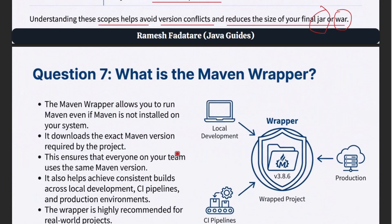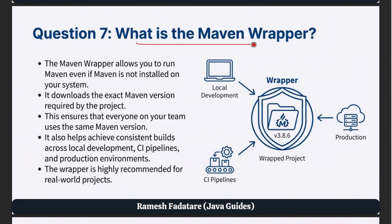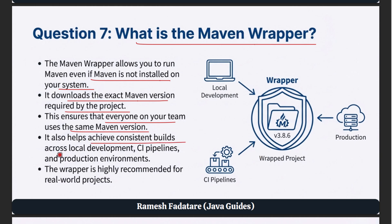Question 7: What is the Maven wrapper? The Maven wrapper allows you to run Maven even if Maven is not installed on your system. It downloads the exact Maven version required by the project, ensuring that everyone on your team uses the same Maven version. It also helps achieve consistent builds across local development, CI pipelines, and production environments. The wrapper is highly recommended for real-world projects.